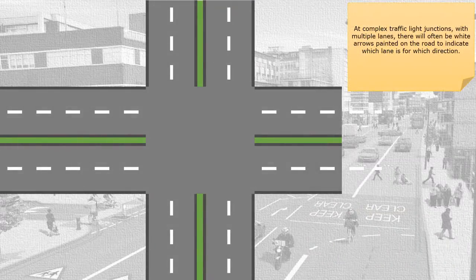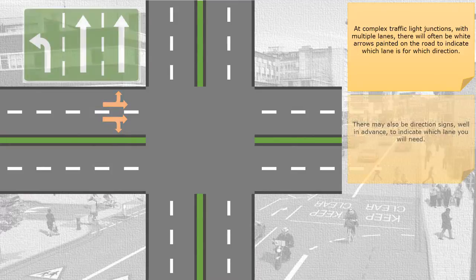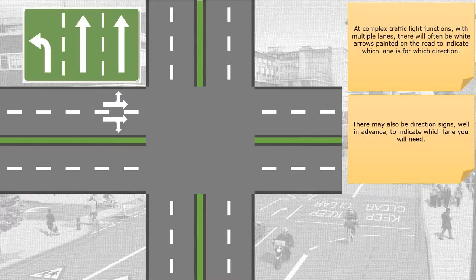At complex traffic light junctions with multiple lanes, there will often be white arrows painted on the road to indicate which lane leads to which direction. There may also be direction signs, well in advance, to indicate which lane you will need.